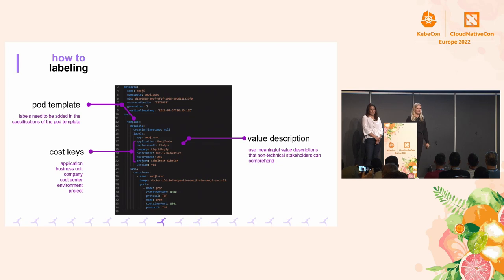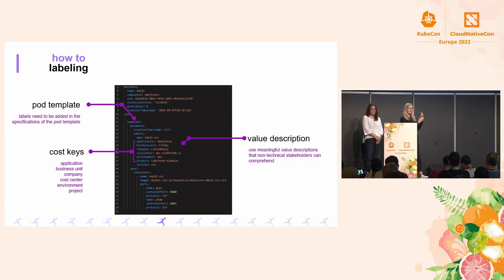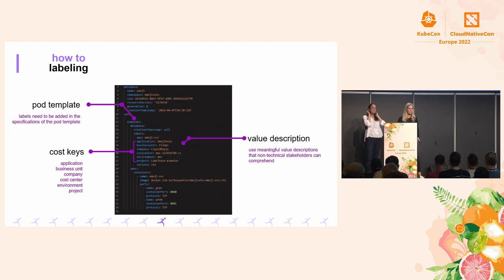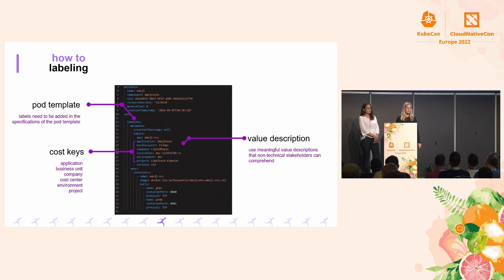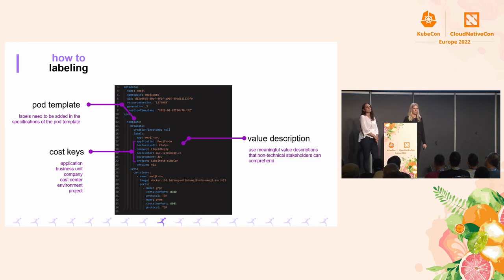When it comes to labeling, your key-value pairs have to be targeting cost management. As for your keys — what you can see on the slide right now — these are the ones the FinOps community has identified as the most common ones. Obviously you can individualize them for your organization. But to answer the questions we saw in the beginning, it's application, business unit, company, cost center, environment, and project that should be outlined when it comes to cost transparency.